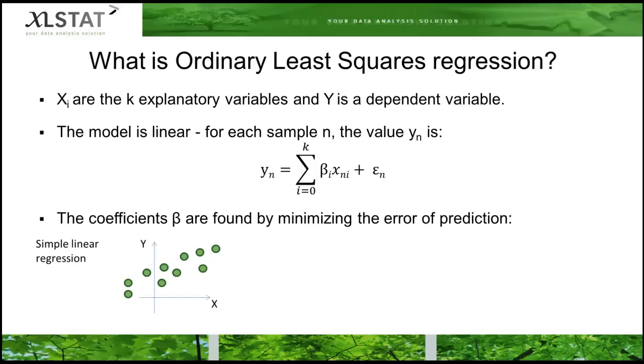If we call X the explanatory variable and Y the dependent variable, the linear model writes that the Y value for a sample n is the sum of its values on X multiplied by the beta coefficients plus an error. The beta coefficients are found by minimizing the errors, hence the name ordinary least squares regression.